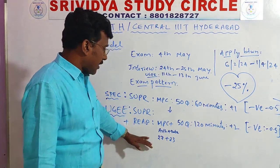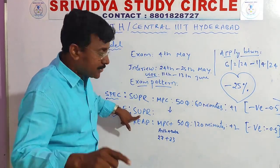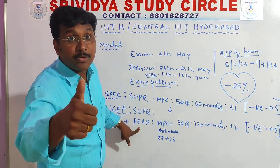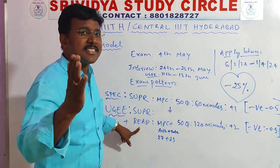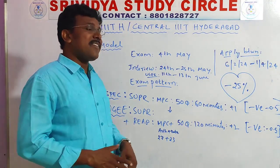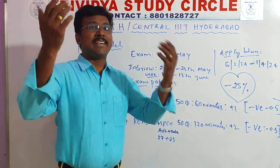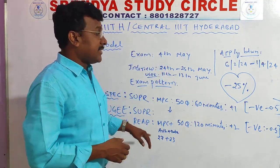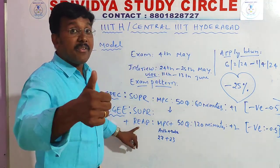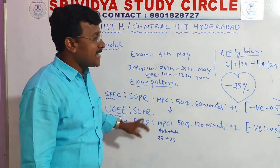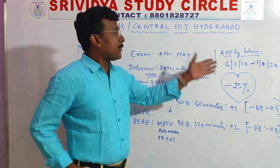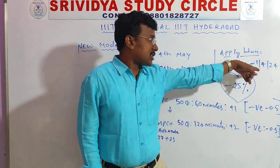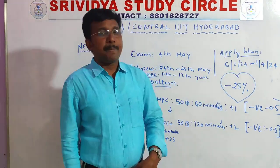Now, SUPR and REAP also have 25% negative marks, my dears. This is the best chance, because previously, many students avoided writing SUPR — there was no negative marking safety before. But this year, this is the best opportunity. Apply between February 6th and April 1st.